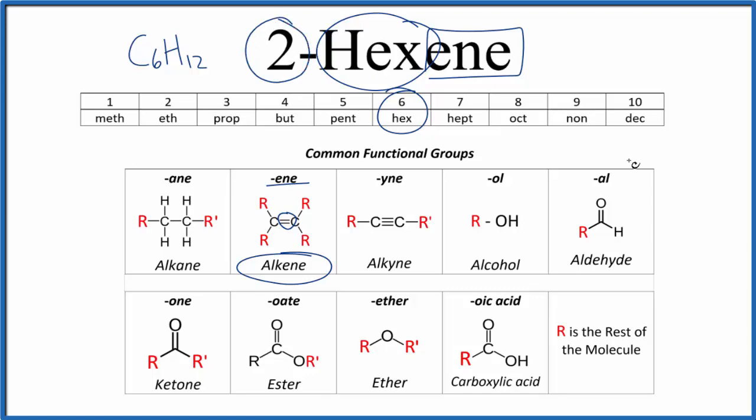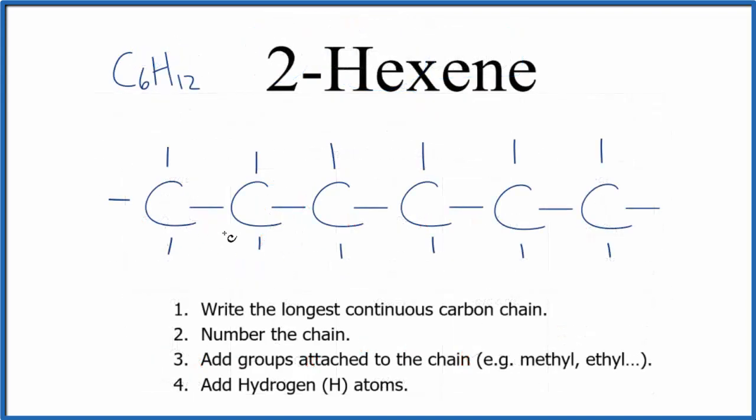Let's write a chain of six carbons. They all have single bonds right now, so that would make this an alkane—in fact, hexane. Let's number each carbon. We know there's a double bond on the second carbon, which means it's between the second and third carbon.